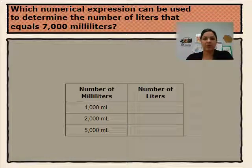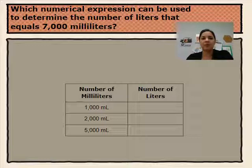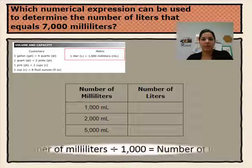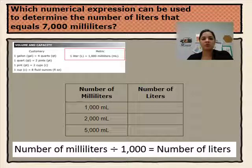We are now going to look at how a table can help us understand converting between units. In this table, we'll be converting from milliliters to liters. We're going to answer the question: which numerical expression can be used to determine the number of liters that equals 7,000 milliliters? We can use the star reference chart to help us. The metric system shows that 1 liter equals 1,000 milliliters, so the numerical expression is: number of milliliters divided by 1,000 equals the number of liters.